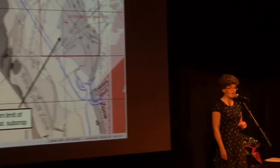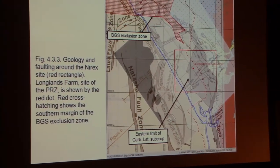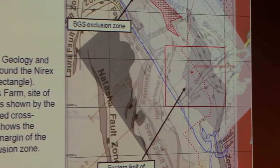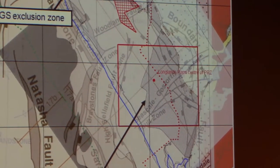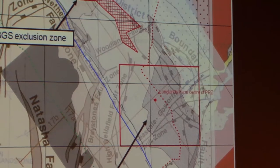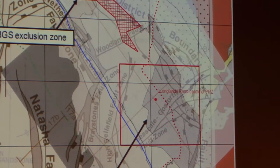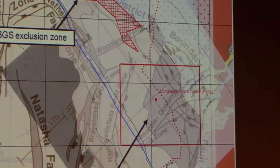This is a picture from Professor David Smy's evidence to the consultation, showing the red square as the actual site where NIREX had its potential repository zone. Longlands Farm is the little red dot, and you can see underneath all these major fault zones running through the area, which could provide fast routes for water flows.